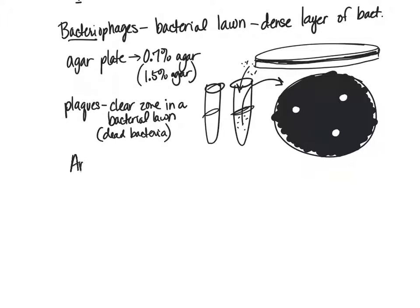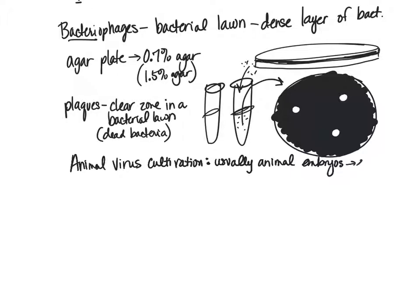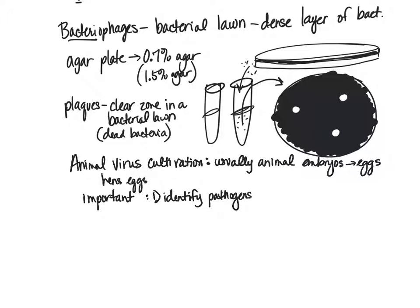When talking about animal virus cultivation, we usually use animal embryos. An embryo is essentially an egg, and oftentimes — particularly when talking about vaccines — we use things like hen's eggs. This is important for a couple of reasons: one, to identify pathogens. In order to identify something that is infecting people, we need to cultivate it, so animal embryos are used when there is an outbreak, for example.